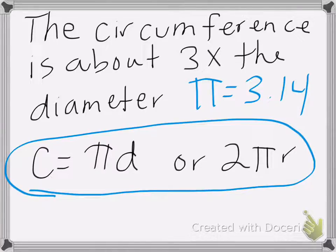Or 2 times pi times the radius. Now this makes sense because the diameter is 2 times the radius, so that's just what we've done over here, and then added pi.